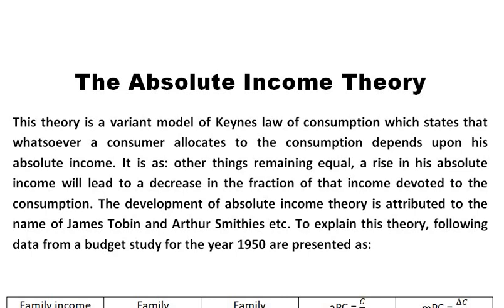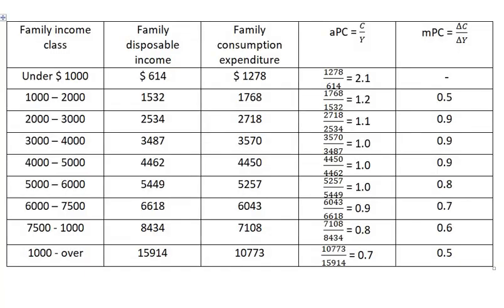cross-section data shows for a given time period how much of family income was devoted to consumption spending on average by a sample of families at various income levels. To explain this theory, following data from the budget study for the year 1950 are presented as Average Family Disposable Income and Consumption Expenditures by Income Class.